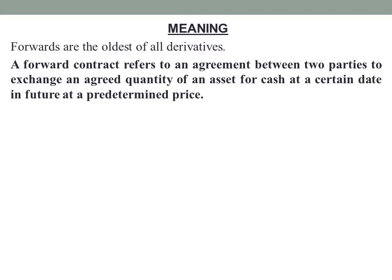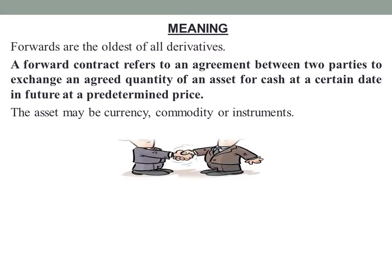A forward contract is an agreement between two parties — one buyer and one seller — involving a specified quantity of an asset, which can be a currency, a commodity, or various financial instruments. For example, consider two parties: A, who is the owner of a mango farm, and B, who is a retail seller of ripe mangoes.